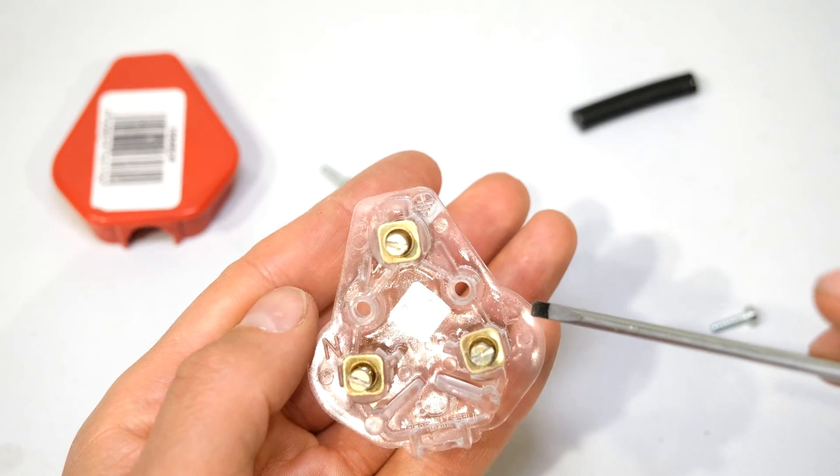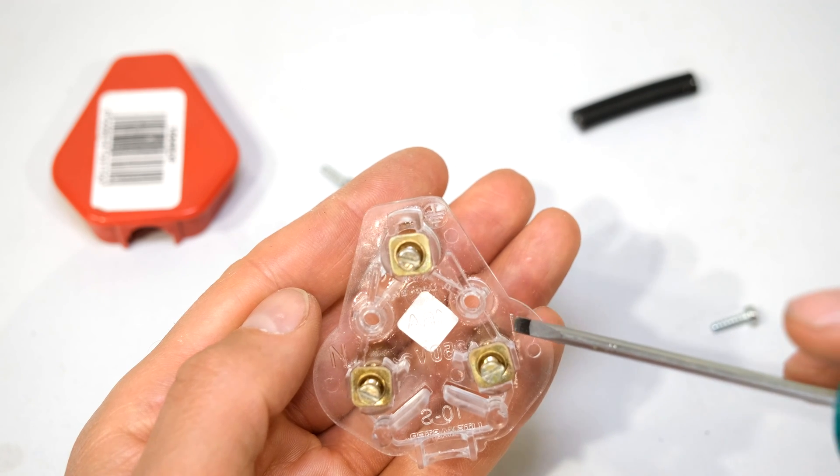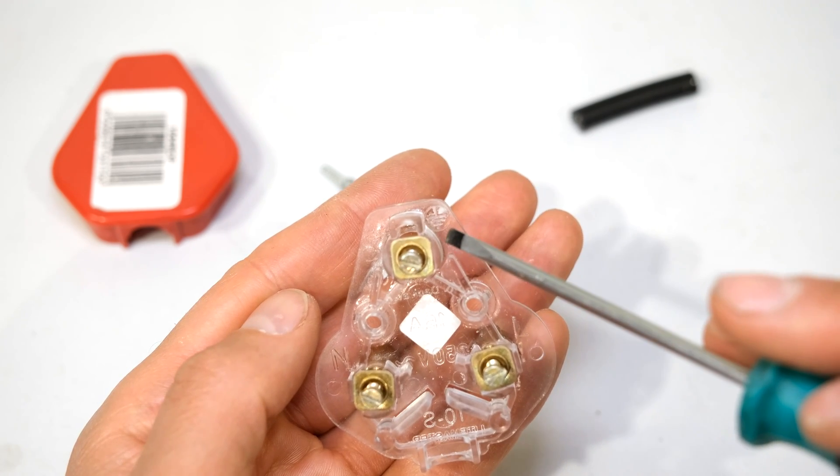Loosen the screws. On most plugs it actually says live, neutral and earth. So if you have a look closely there you see the L. There's the N. And there's the earth.